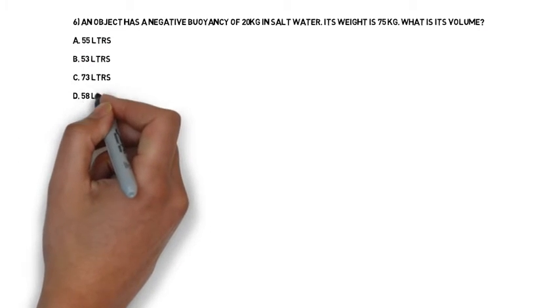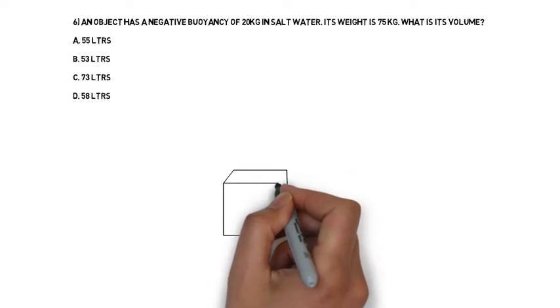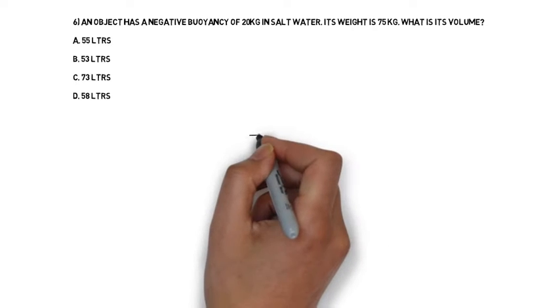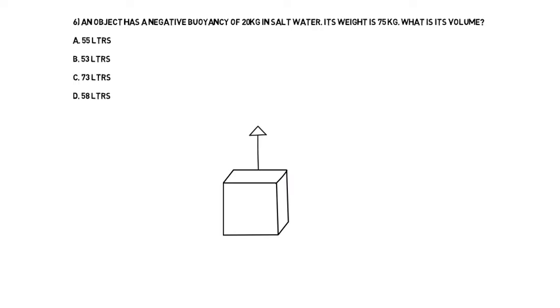Let's draw our object, a cube. It has an upward force, which is based on its volume and the type of water it's in, and a downward force, which is its weight.